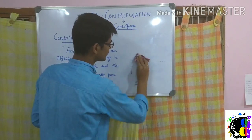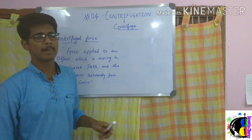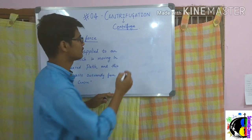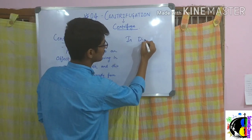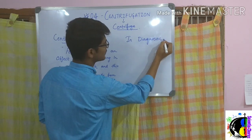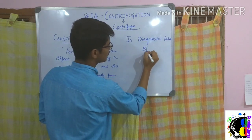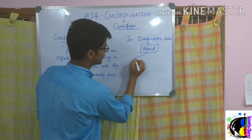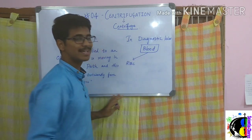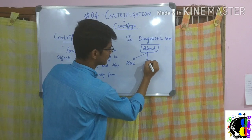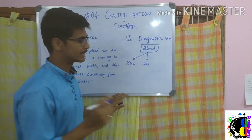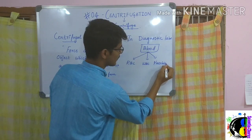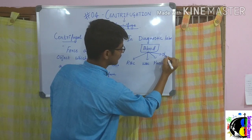Another application of centrifugation is in diagnostic labs, where it is used to separate the components of blood. The components of blood are: RBC (red blood cells), WBC (white blood cells), platelets, and plasma.